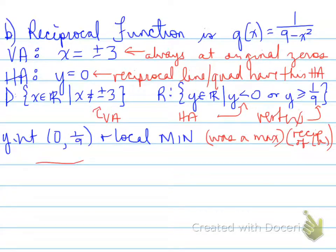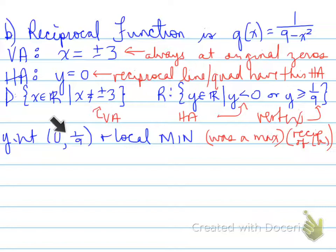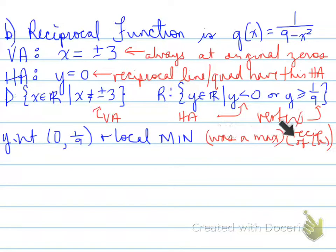Where we left off was that we had talked about the y-intercept becoming a local min. Remember that the original point (0, 9) was our vertex, and when we reciprocate that it will become (0, 1/9), which originally was a max, but when we graph it you're going to notice that the reciprocal turned itself into a local minimum. We'll see the graph and that'll make more sense when we look at the final product.